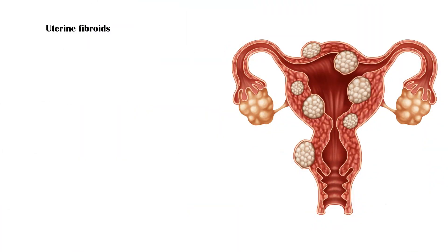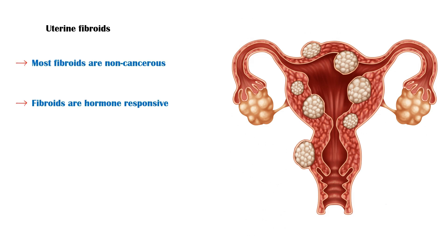Uterine fibroids. Fibroids are muscular tumors that develop in the wall of the uterus. Most fibroids are non-cancerous and may range in their size. Fibroids are hormone-responsive and are one of the most common causes of heavy menstrual bleeding.